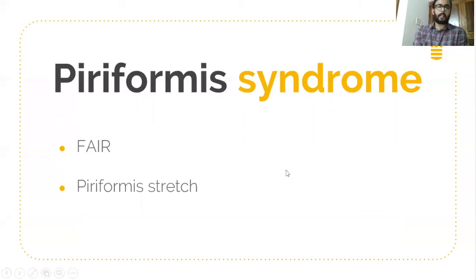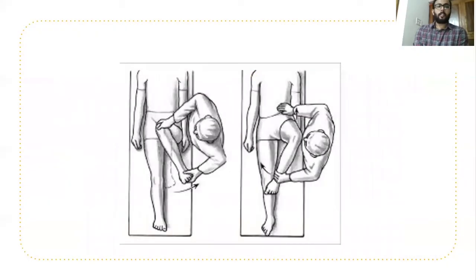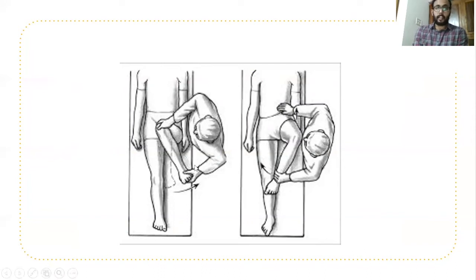Another specific examination is the piriformis stretch test. This involves flexion, adduction, and internal rotation — as opposed to flexion, abduction, and external rotation used for sacroiliac dysfunction. Specifically, flex the hip up to 90 degrees, then adduction, then internal rotation. In this maneuver, the patient feels pain over the piriformis muscle.